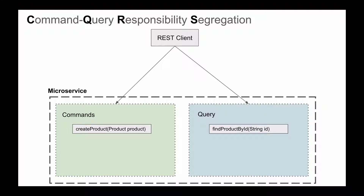Let's assume that we have a REST client application that communicates with our microservice. When a client application communicates with our microservice, it will either send an HTTP request like HTTP POST, PUT, DELETE, or PATCH, or it can also send an HTTP GET request. We can think of HTTP requests like POST, PUT, DELETE, or PATCH as commands that perform certain operations and modify information in our database. And we can think of an HTTP GET request as a query, because it requests our microservice to return some information.